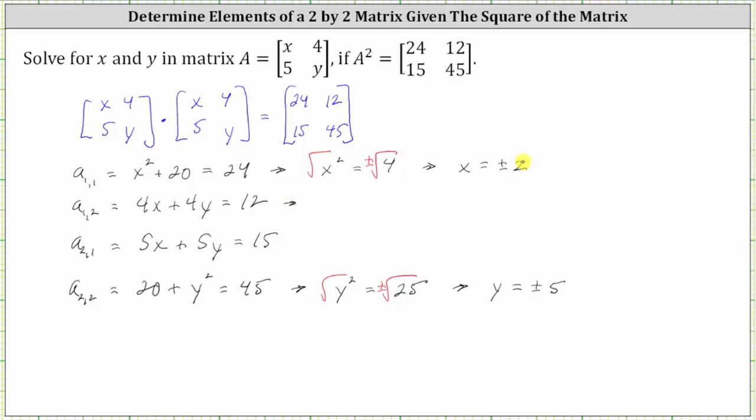Let's go ahead and first try a positive two and a positive five, which would give us four times two plus four times five equals 12. But that's, of course, not true. Eight plus 20 is 28, not 12.